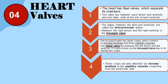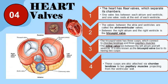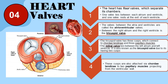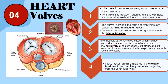The heart has four valves which separate its chambers. One valve lies between each atrium and ventricle, and one valve rests at the exit of each ventricle. The valves between the atria and ventricles are called the atrioventricular valves. The tricuspid valve lies between the right atrium and right ventricle; it has three cusps which connect to chordae tendineae and three papillary muscles. The mitral valve lies between the left atrium and left ventricle, also known as the bicuspid valve due to its having two cusps, also attached via chordae tendineae to two papillary muscles.